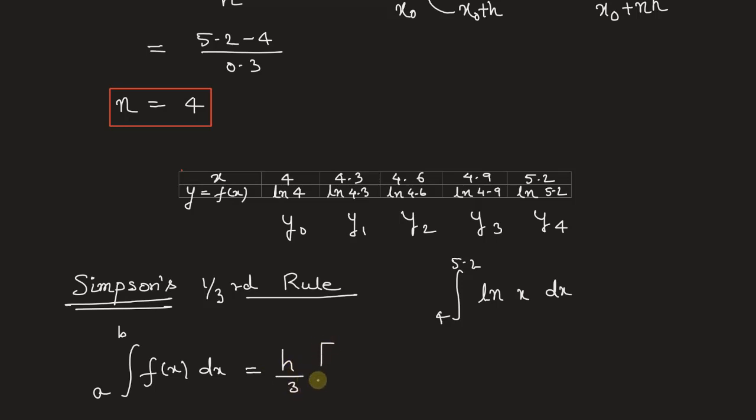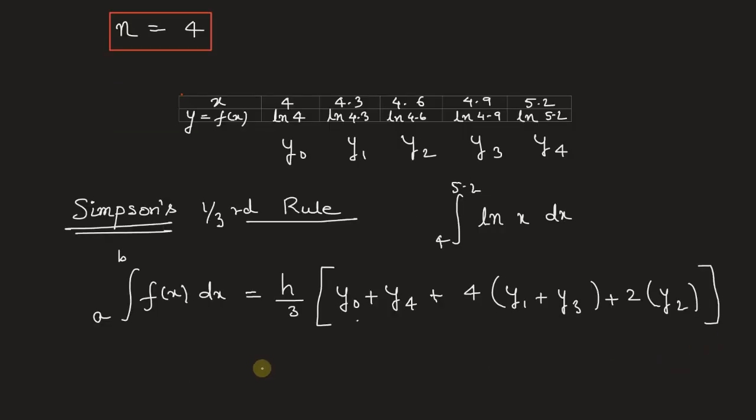(h/3) multiplied by [y₀ plus y₄ plus 4 times (y₁ plus y₃) plus 2 times y₂]. Now let's substitute the value of y and h from the table. h is 0.3 divided by 3, multiplied by the y values.